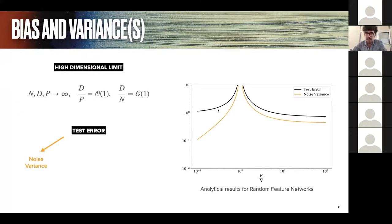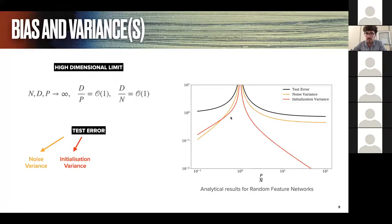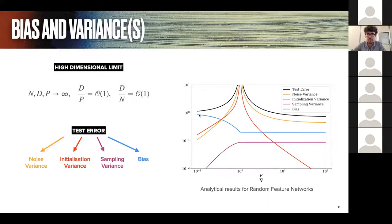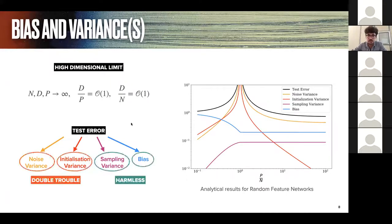The test error displays the double descent. Looking at the various terms, the noise variance and the initialization variance both diverge at the interpolation threshold when there is no regularization. In stark contrast, the two remainder terms — the sampling variance and the bias — reach a plateau at the interpolation threshold with a distinctive kink reminiscent of a phase transition, which can be smoothed out by regularization. The conclusion is that the noise variance and the initialization variance lie at the heart of the deep double descent, and that over-parameterizing is beneficial precisely because it amounts to removing some variance.